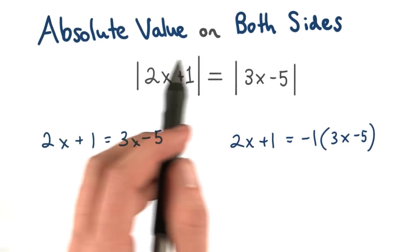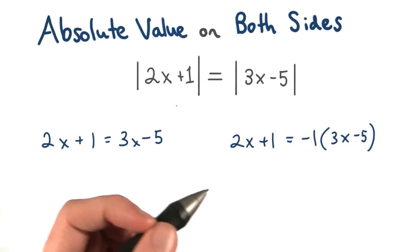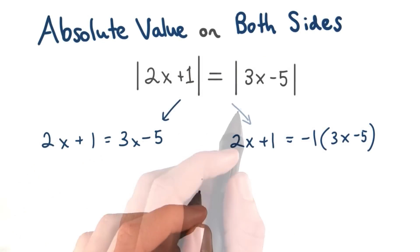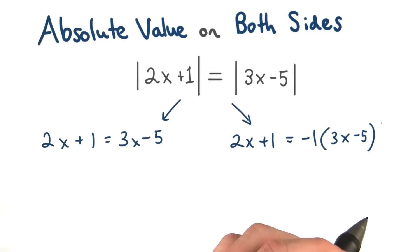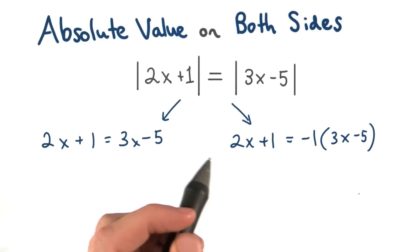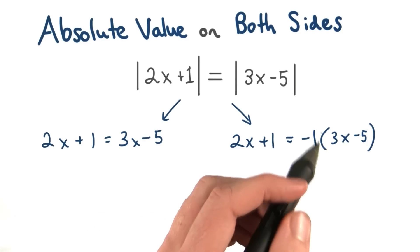Whenever we solve absolute value on both sides, we always write two equations. We keep both sides positive, and then we multiply one side by a negative. And again, it doesn't matter which side has the negative. Usually, we make the second one the negative.